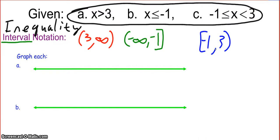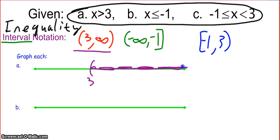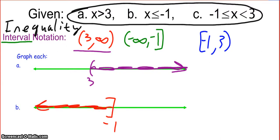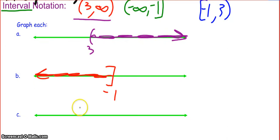So now we want to graph these on the number line. You've done this before, probably starting in 6th or 7th grade. The only thing we're going to change now is: in the past you might have used an open circle to say you are not including the number and a closed circle to say you are including the number. Well, we're not going to do that anymore. We're going to use our interval notation symbols — parentheses and brackets. So to graph A, I'm going to put a parenthesis at 3 and shade to the right. To graph B, I'm going to put a bracket at negative 1 and shade to the left. And to graph C, I'm going to put a bracket at negative 1, a parenthesis at 3, and shade in between.